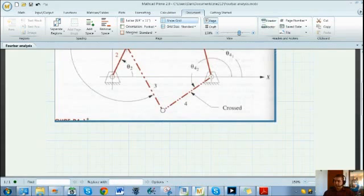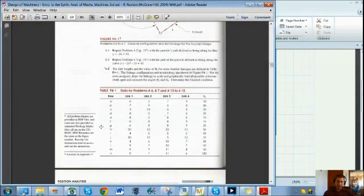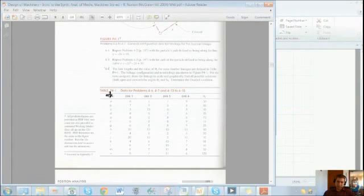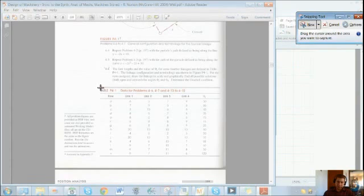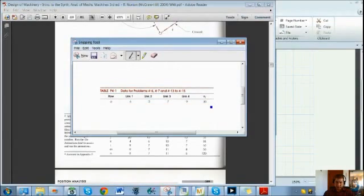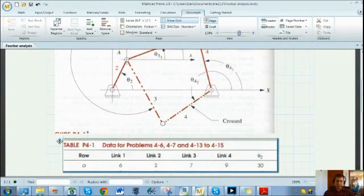Let's go ahead and get some data for this particular four-bar mechanism. We're going to look at row A here. Again I'll use my snipping tool to pull data into my file for row A.